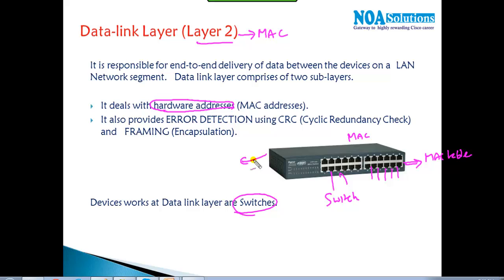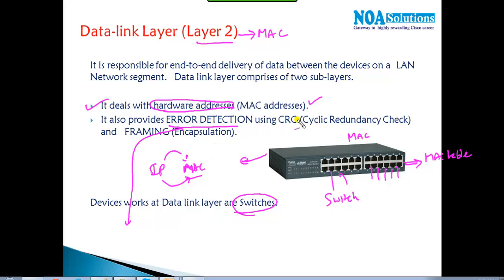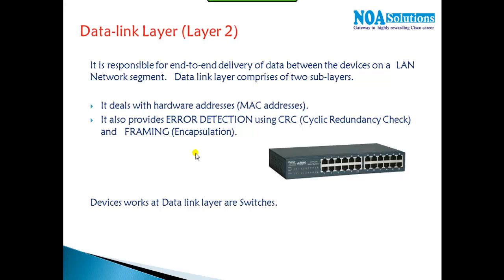Switches don't identify IP addresses directly, but internally there is a protocol called ARP which converts IP to MAC. The actual forwarding, however, happens based on the MAC address. The data link layer's major job is to identify devices based on MAC addresses. It also performs error correction by checking frames using CRC — cyclic redundancy check — and if any frame has issues, it will drop that frame. It also handles encapsulation, such as framing and dot1Q encapsulations.